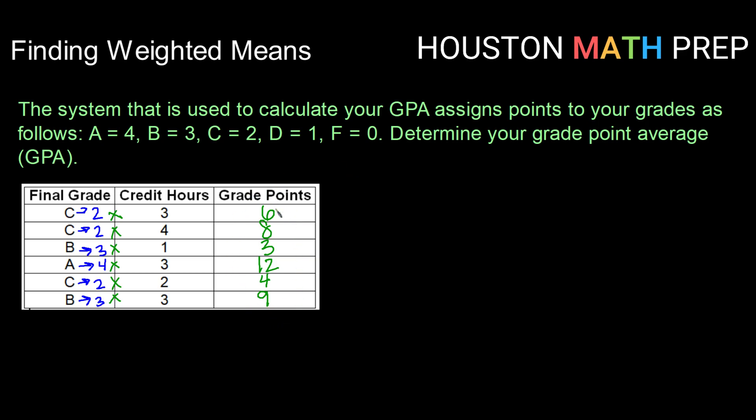So when I take the average of those, I'm going to take my GPA here. I'm going to add up my grade points: 6 plus 8 plus 3 plus 12 plus 4 plus 9. And I'm going to divide by the number of credit hours that I took, so I'm going to divide by my total credit hours.